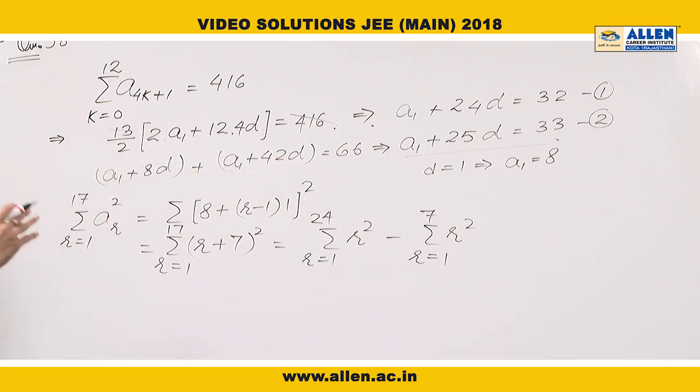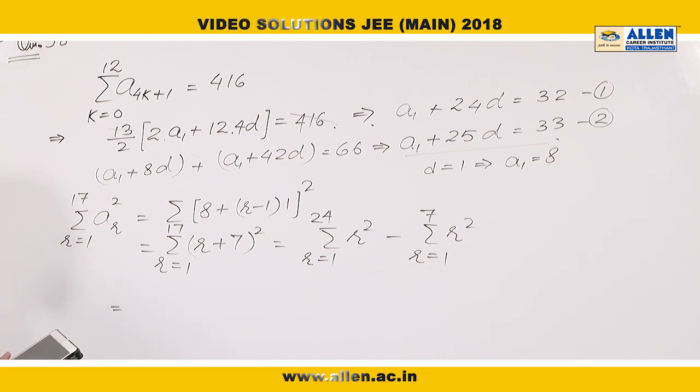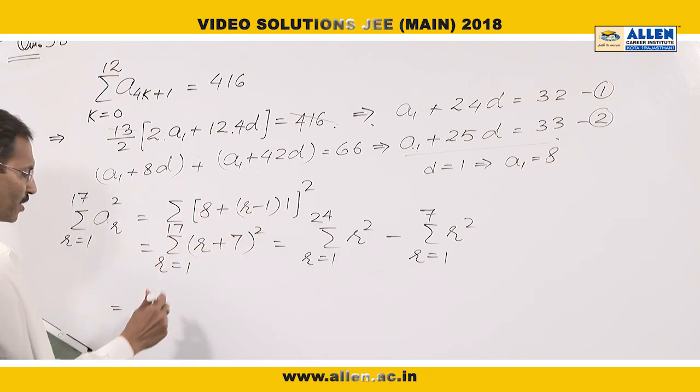And we know the formula of summation r² which is n(n+1)(2n+1)/6 and here n is 24.